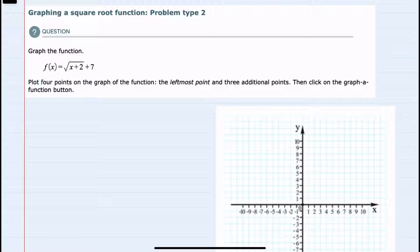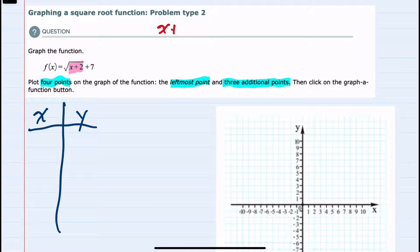To graph, we're asked to find four points on the graph of the function: the leftmost point and three additional points. So to find these I'm going to create a table, and to determine the x values that I'll be substituting in, I'm going to look underneath the radical, which here is x plus 2.